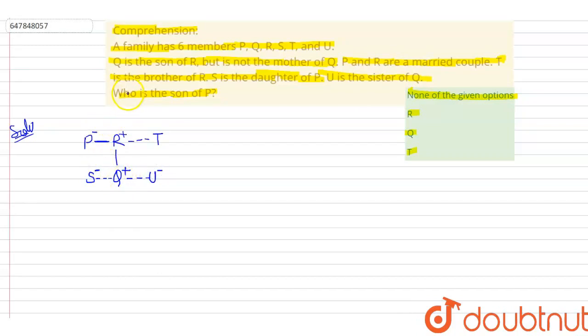Now look here. For males I've used positive sign, and for females I've used negative sign. Who is son of P? See, P and R are married.